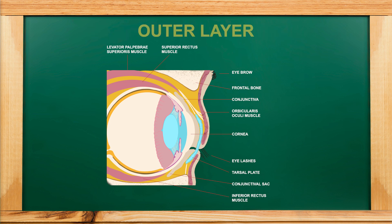Coming to the outer layer of the eye — that is the sclera. The sclera is the white part, or the white of the eye. The posterior 5/6th of the outer layer is the sclera, which is made by fibrous tissue.